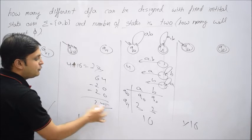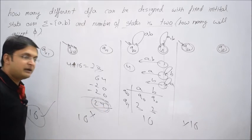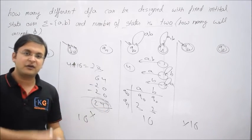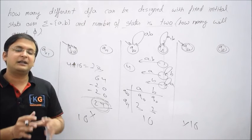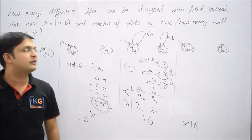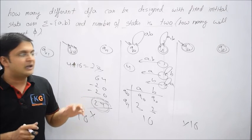So now you understood, total we have 64 combinations out of which 20 accepts universal, 20 accepts empty, so how many remains? Only 24. So you see 24 DFAs will be there which will accept neither the universal nor the empty, so then they'll accept some important logic.